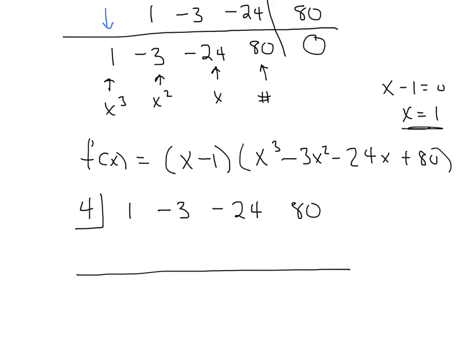And we're going to do synthetic division again. So remember, first we bring the 1 down, 1 goes here, and we're going to do 4 times 1, which gives us 4. Negative 3 plus 4 is a positive 1. We multiply 4 by 1 down here, and that's going to give us 4. Negative 24 plus 4 is negative 20. 4 times negative 20 is 80. And again, your remainder is 0.